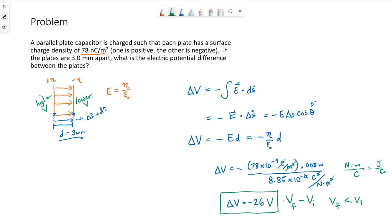Now by the way, getting an answer of negative 26 just means the positive plate is 26 volts higher than the negative plate. It doesn't tell me the positive plate is 26 volts. The negative plate doesn't have to be zero. It just tells me the difference between the two.